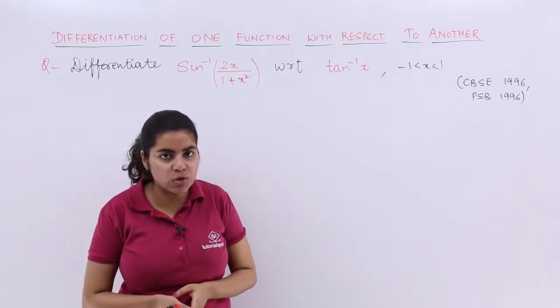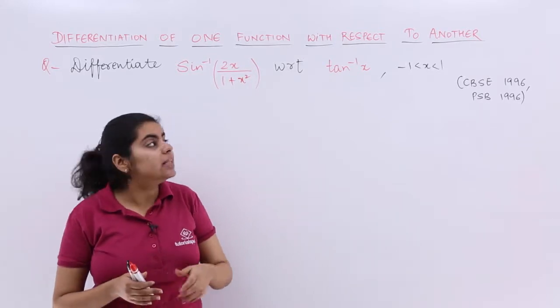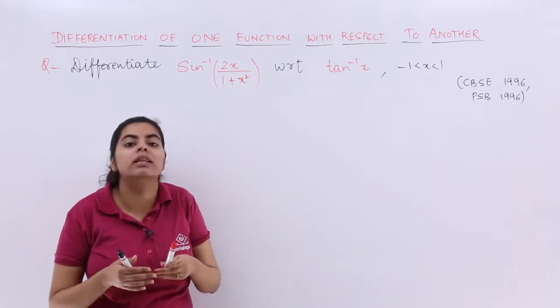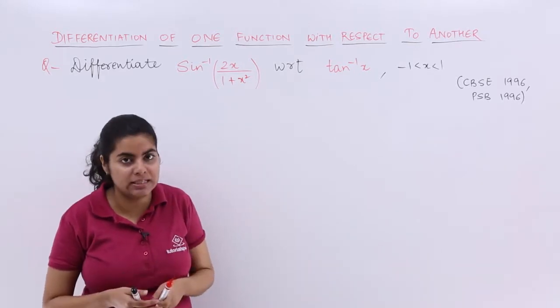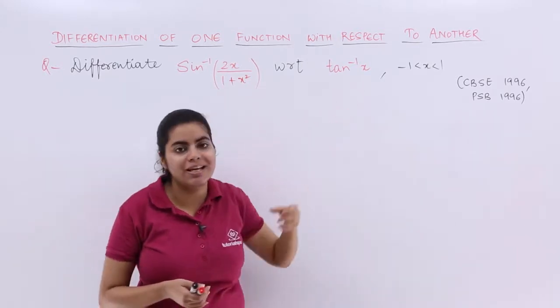And the condition imposed on x is that x lies between minus 1 and 1. Now we know that there are two functions and both are the functions in x. The first function is named as u for our convenience, the second function as v.